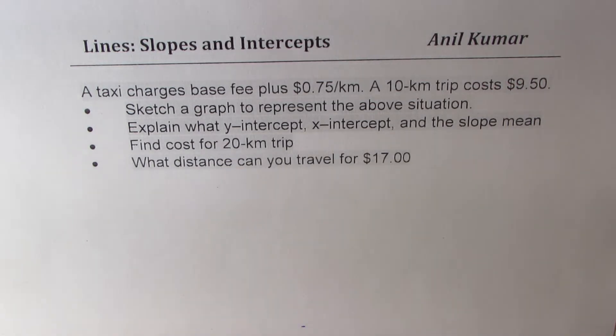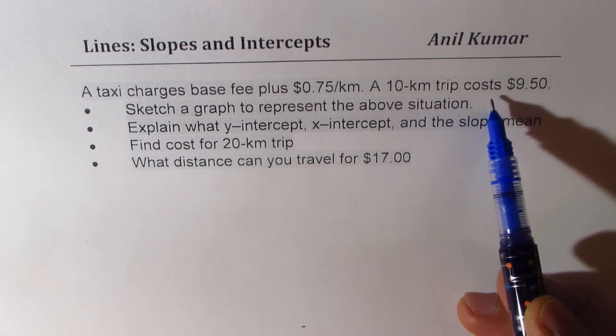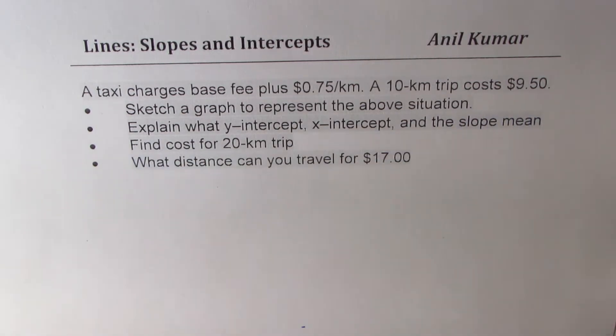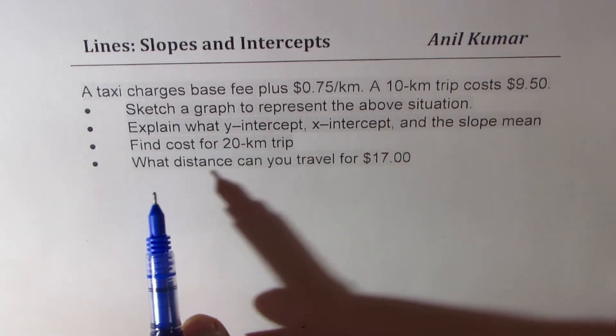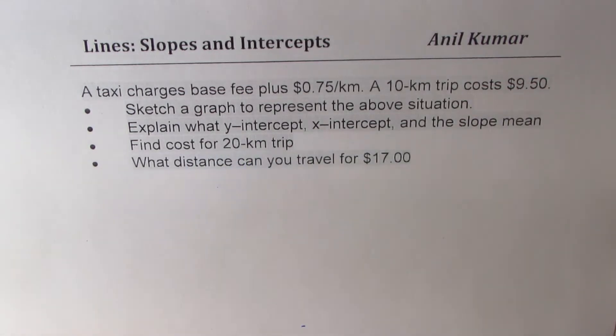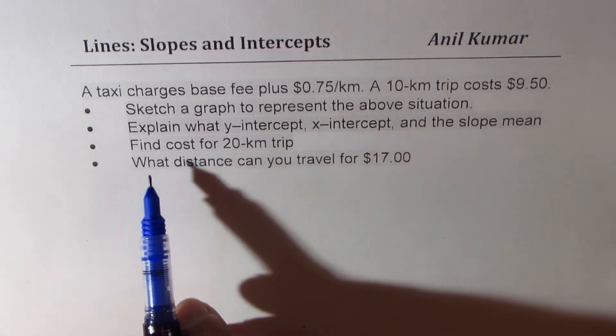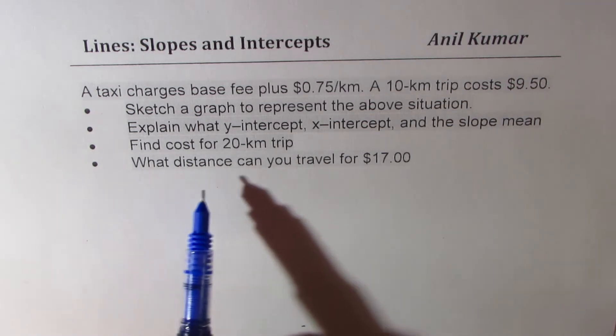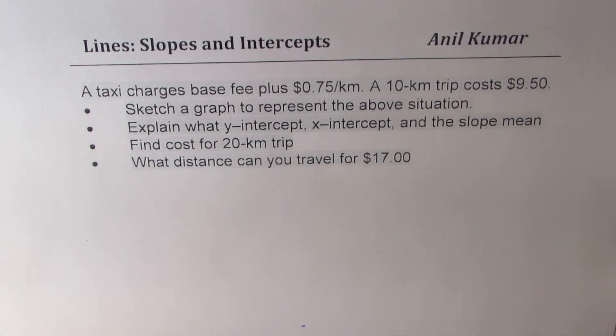A taxi charges base fee plus $0.75 per kilometer. A 10-kilometer trip costs $9.50. We need to sketch a graph to represent the above situation, explain what y-intercept, x-intercept, and the slope mean, find the cost for a 20-kilometer trip, and determine what distance can you travel for $17. So these are the four related questions.